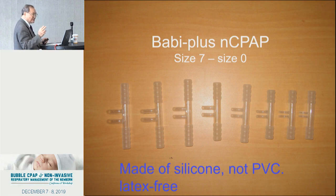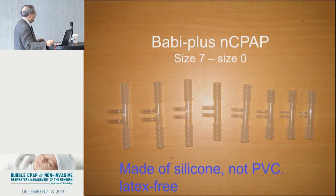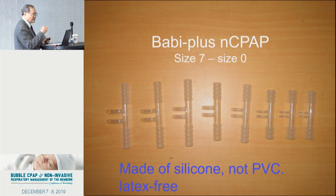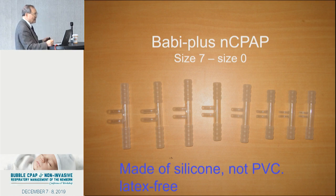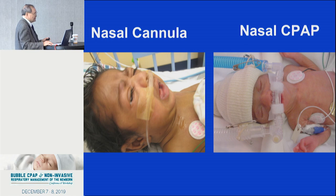Hudson made the prong from silicone instead of PVC — more inert to tissue. I measured our babies' noses and came up with six sizes, zero through five. They later added a larger size and a smaller size zero. With the small silicone sizes, you must make sure the prong doesn't get pinched. Because of the larger sizes available, even BPD babies who outgrow standard prongs can be accommodated.